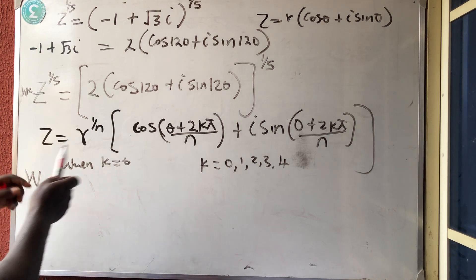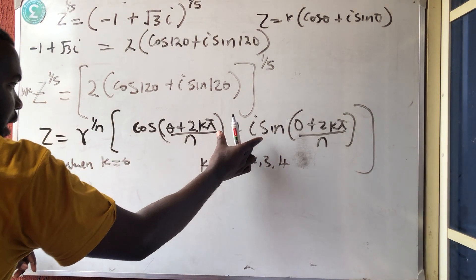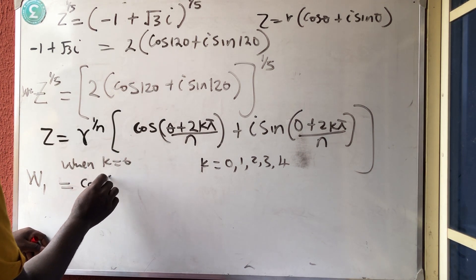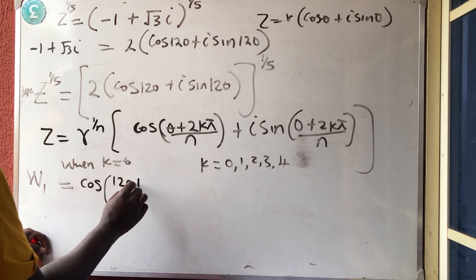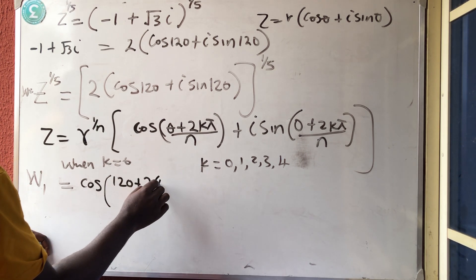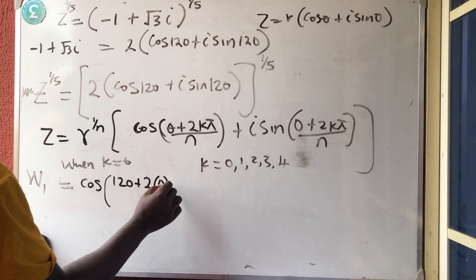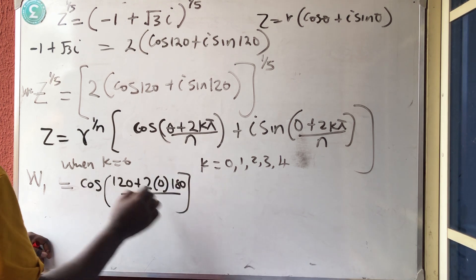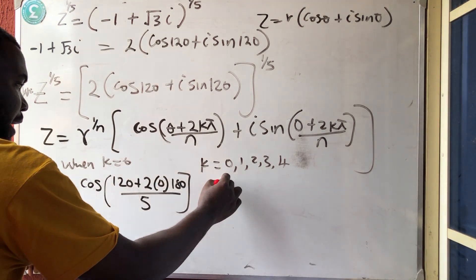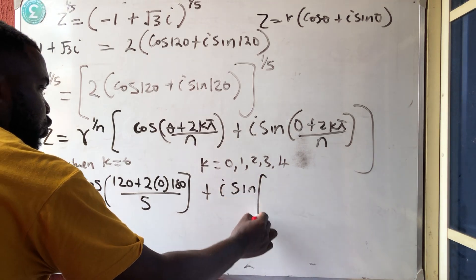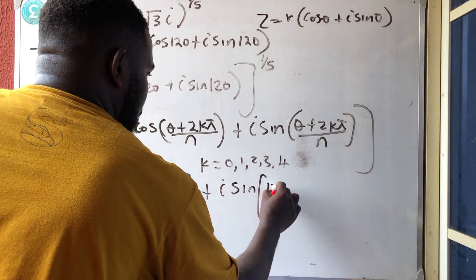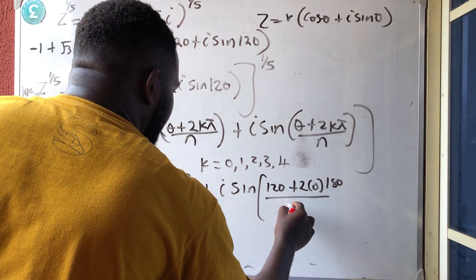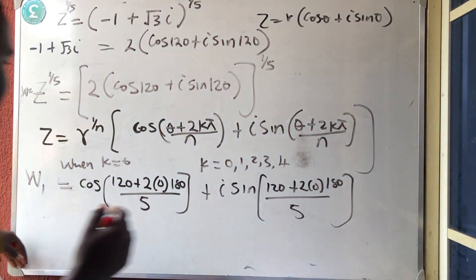W1 is equal to: cos bracket (120 + 2 × 0 × 180) over 5, plus i sine the same thing — (120 + 2 × 0 × 180) over 5. K is 0 here. That is the first one.